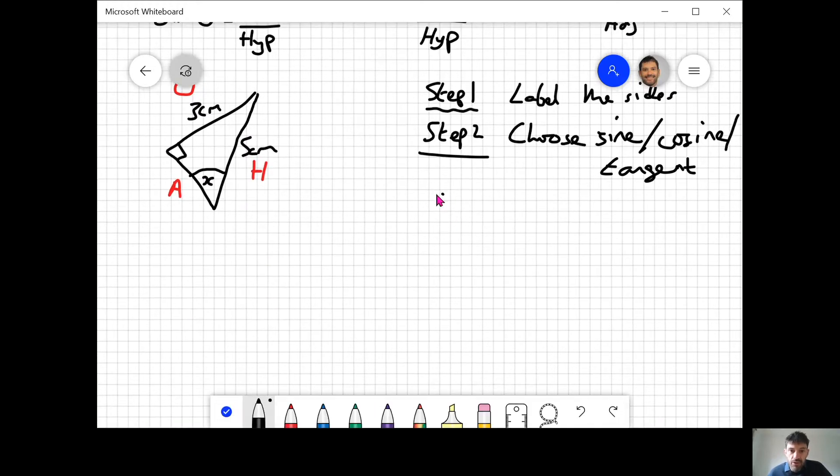Step three: write out the formula. It's a really good habit to always do that before step four. Step four is substitute. Sine of the angle equals O over H, and that's what I mean by the formula. Step four: substitute.